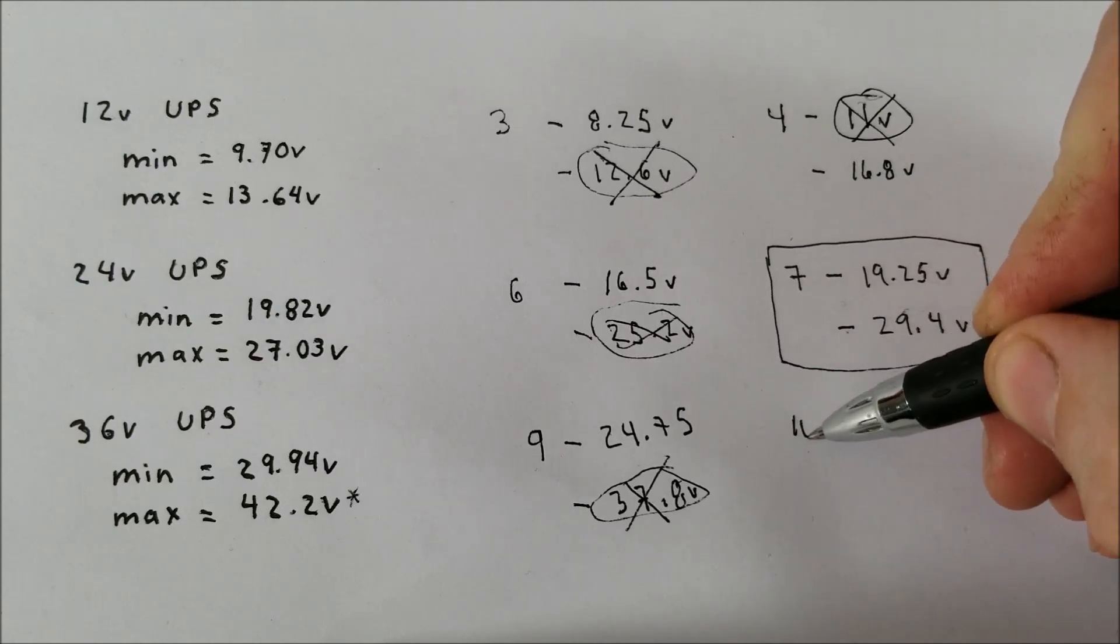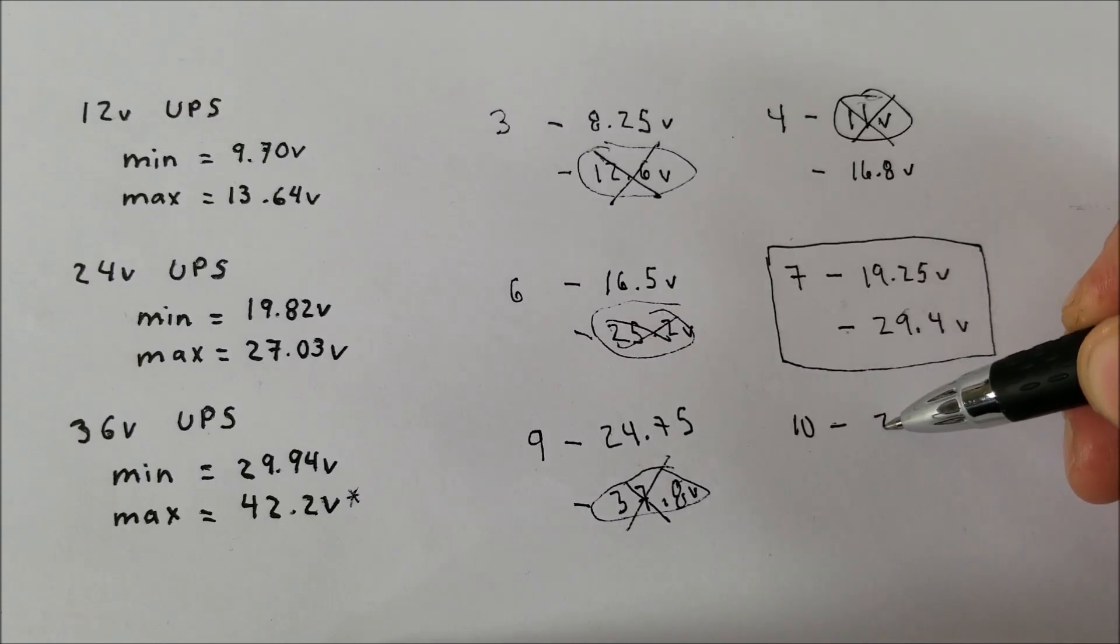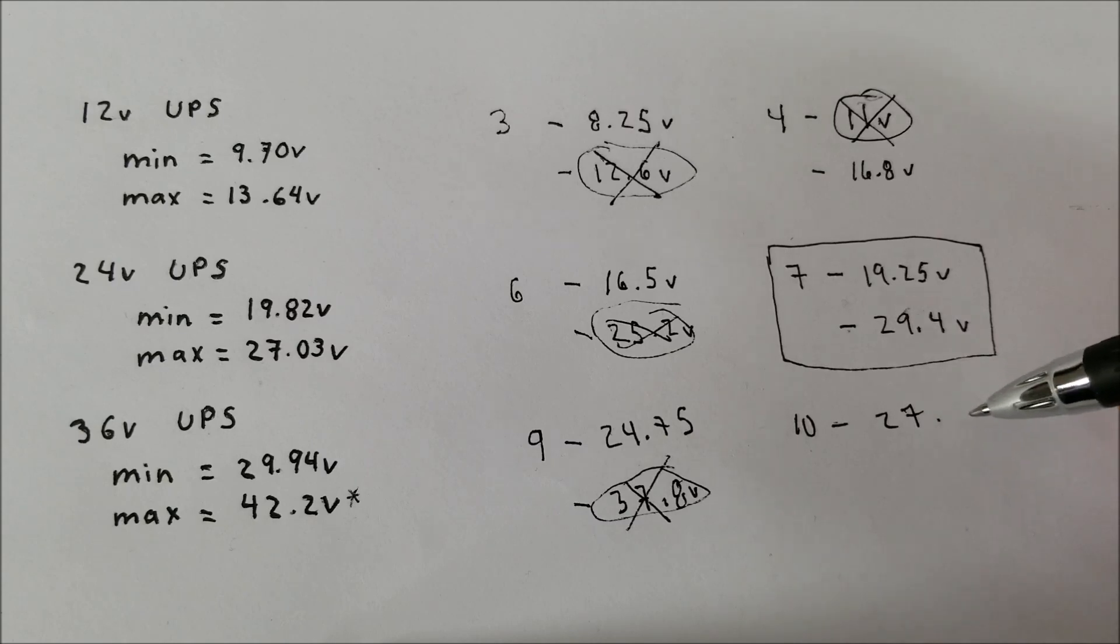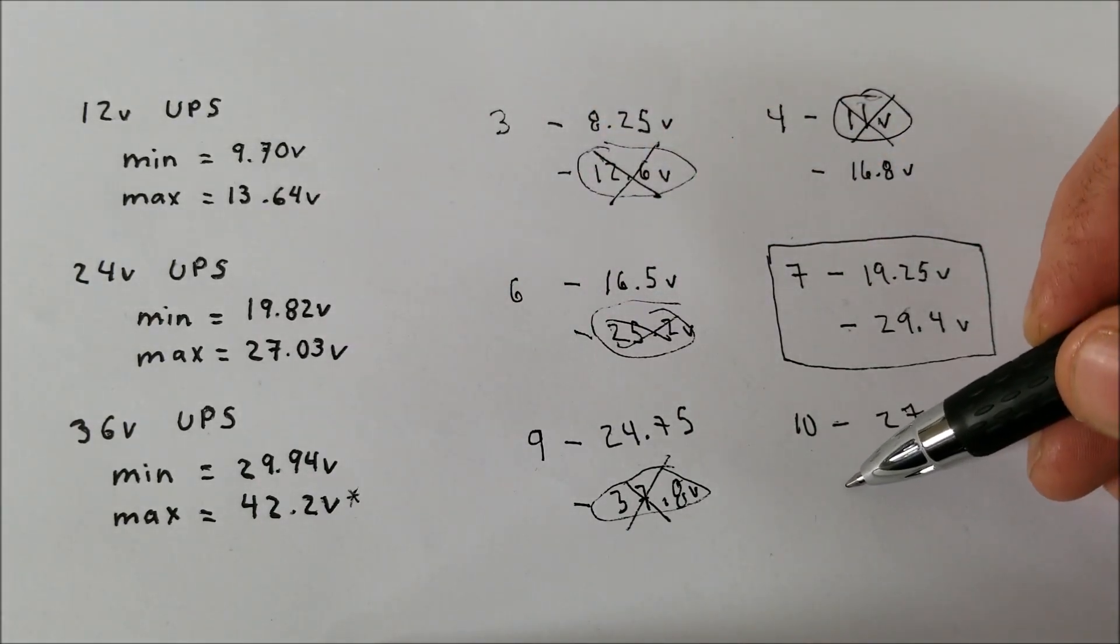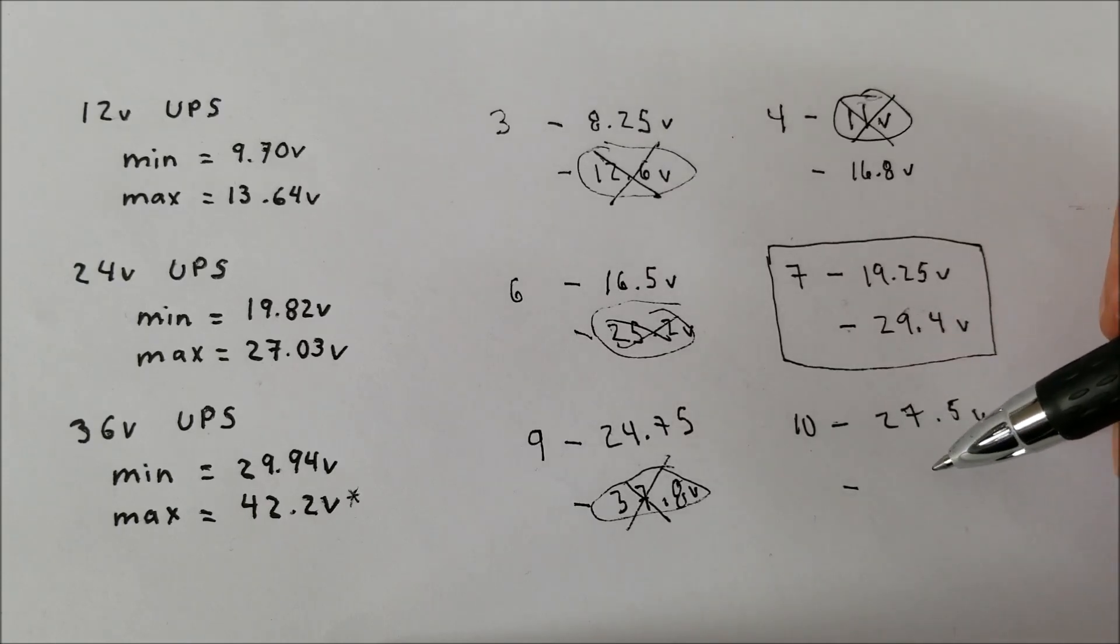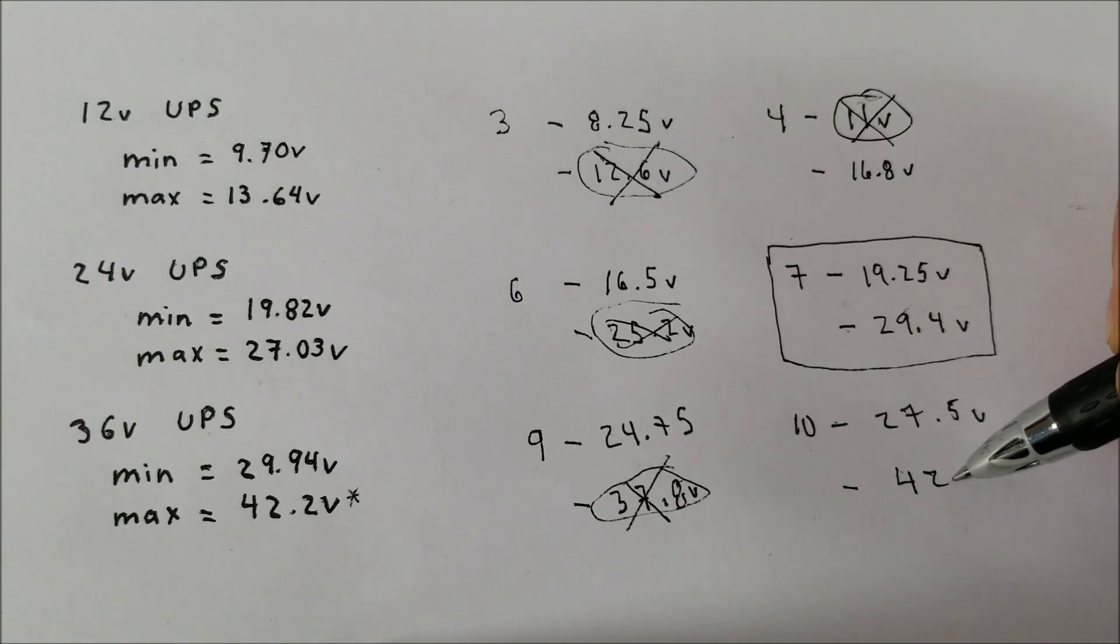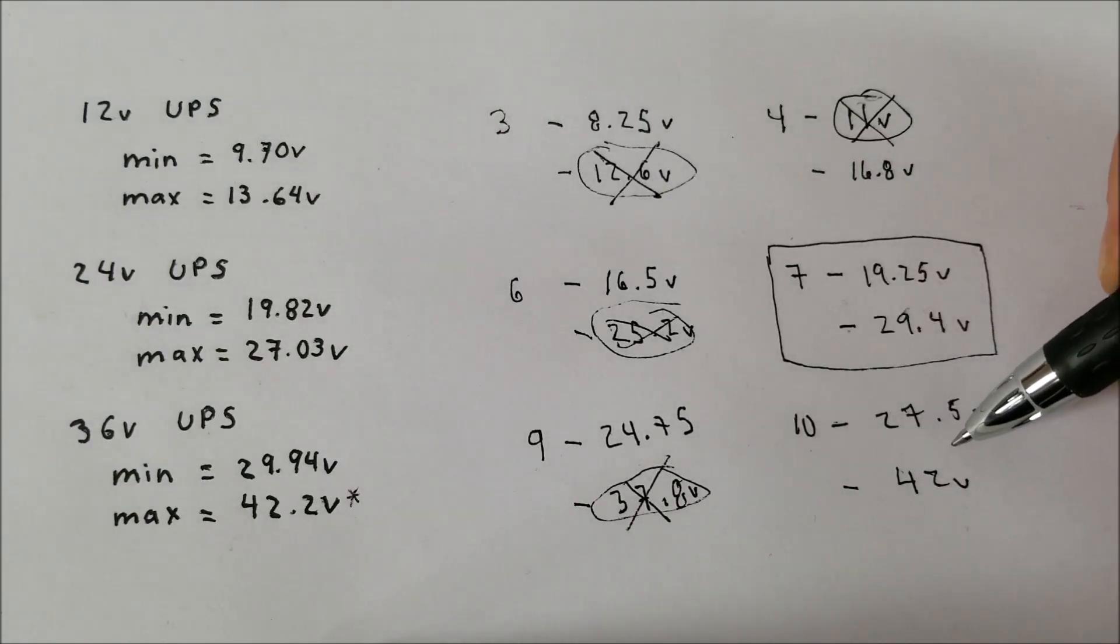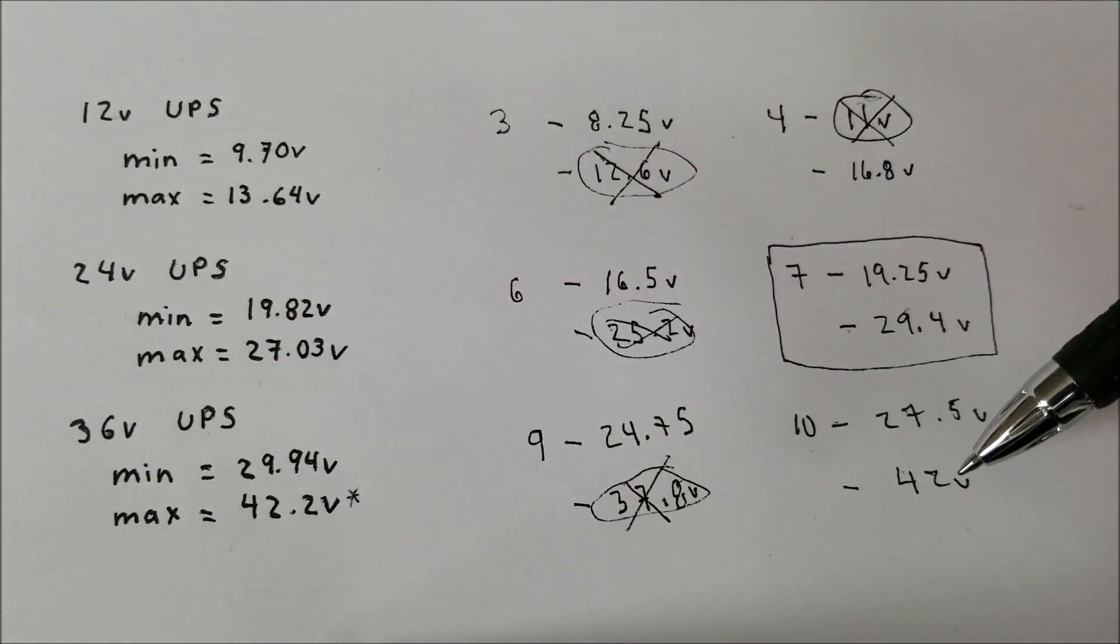So let's try 10 cells in series. So 10 times 2.75V is easy. So we get 27.5V, which is safely below the 29.95V. Now if we do 4.2 times 10, we get 42V. Now here, it's fairly close to the maximum voltage here. It's only 0.2V above.